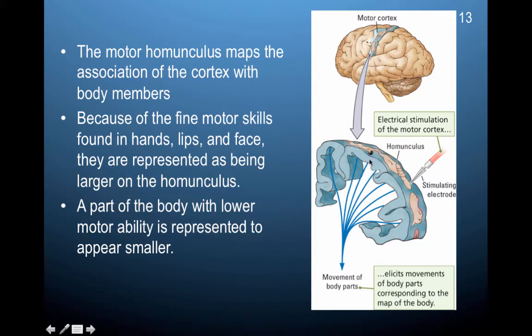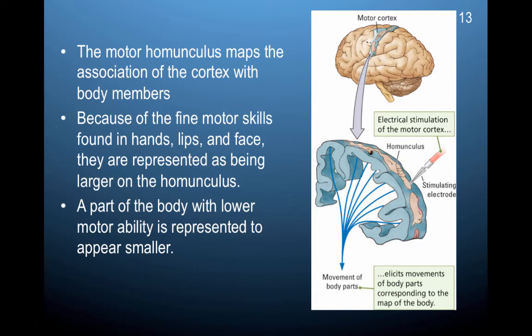We see that over half of the motor cortex is devoted to our feet and toes. Here are the lips and tongue, and over here are the hands. They have a much larger representation than would actually reflect the physical size of those body parts.